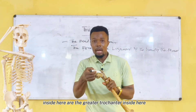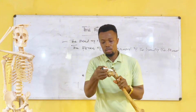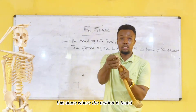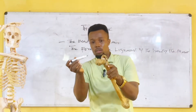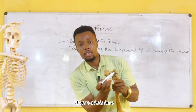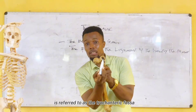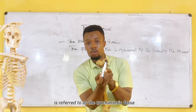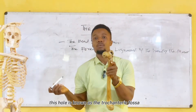Inside the greater trochanter, at this place where the marker is pointing, there is a hole here. This hole is referred to as the trochanteric fossa.